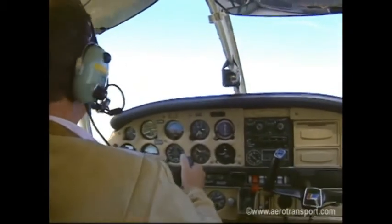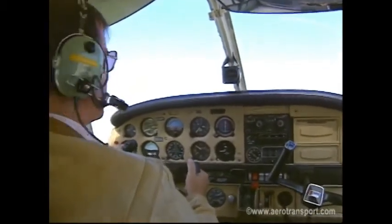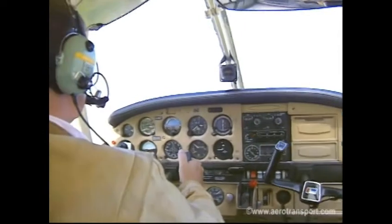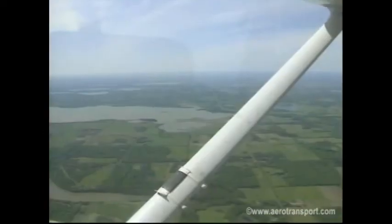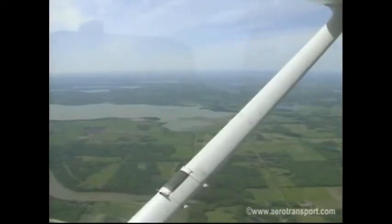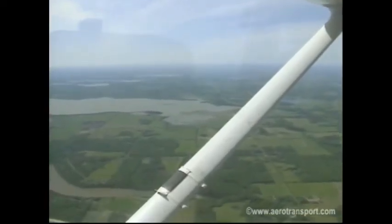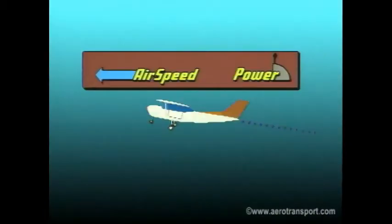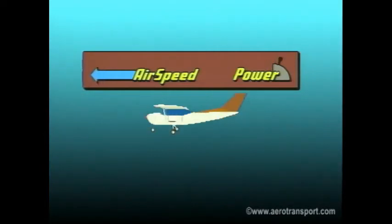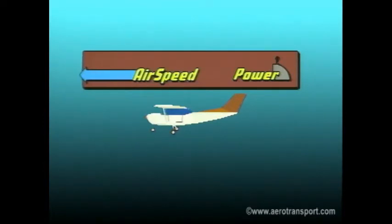Look at the instrument panel and note the steady increase in height on the altimeter and the steady rate of climb on the vertical airspeed indicator. Again, it cannot be stressed enough to keep a good lookout for other aircraft while you climb. Once you have reached the desired altitude, you will return to straight and level flight. First, put the aircraft in a normal cruise attitude and accelerate to normal cruising speed, but be careful not to exceed the maximum RPM.